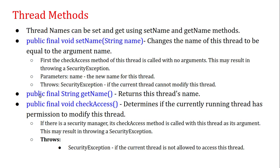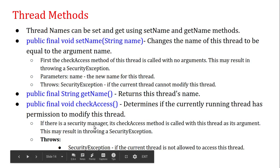Another method is public final String getName(), which returns this thread's name. There is also public final void checkAccess(). This method determines if the currently running thread has permission to modify this thread. If there is a security manager, the checkAccess method is called with this thread as its argument, which may result in throwing a SecurityException.